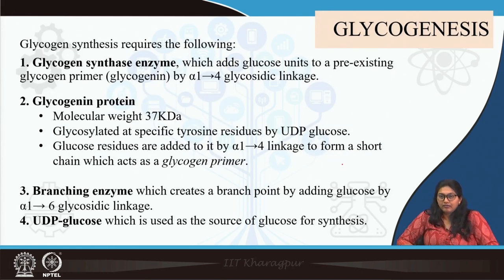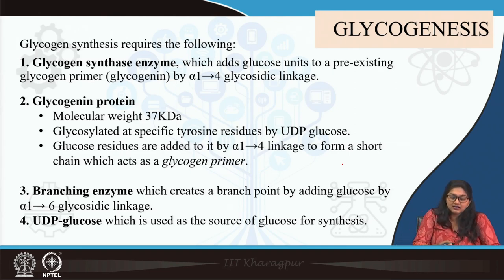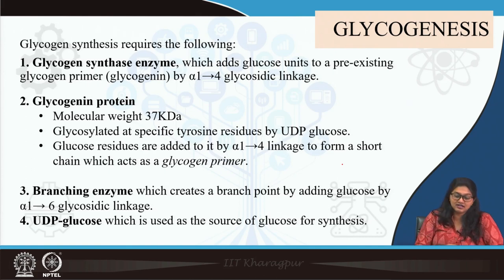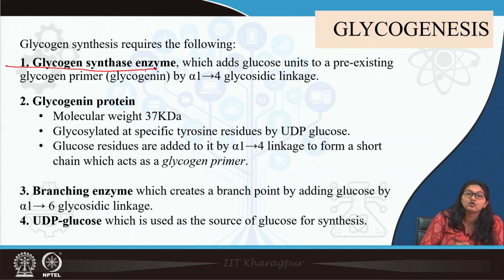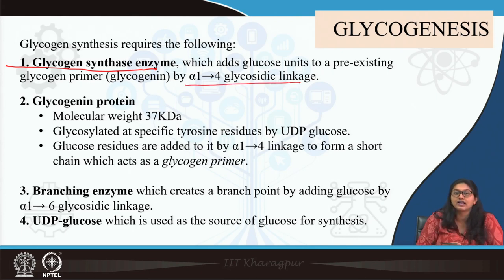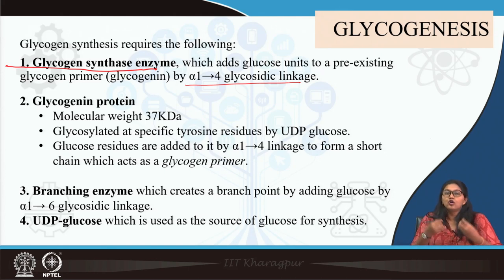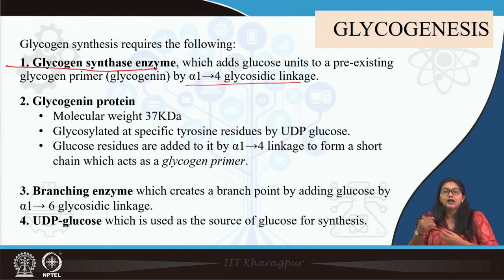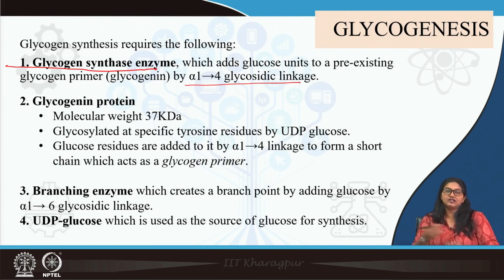Next we move on to the metabolic pathway of glycogen synthesis, which is known as glycogenesis. For glycogen synthesis, these are the enzymes as well as few other biomolecules which are required. The main enzyme required for glycogen synthesis is — as evident by the name — glycogen synthase. This enzyme basically forms alpha 1,4 glycosidic bonds between two glucose residues: one present on a pre-existing glycogen primer, and glucose added from UDP-glucose. Then we need a protein — that is glycogenin.